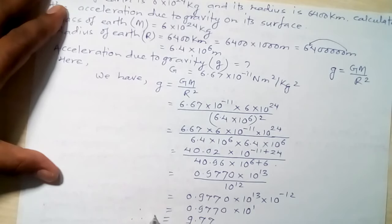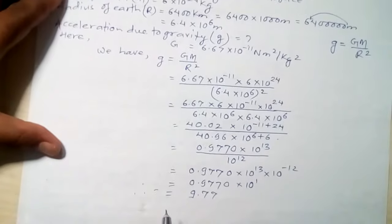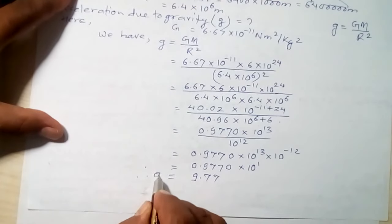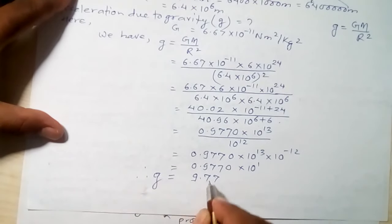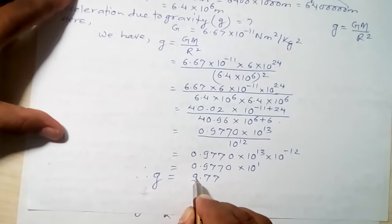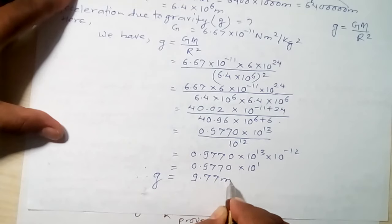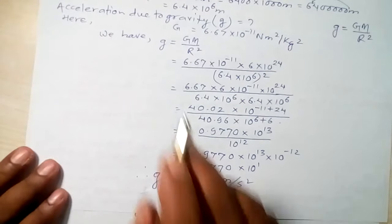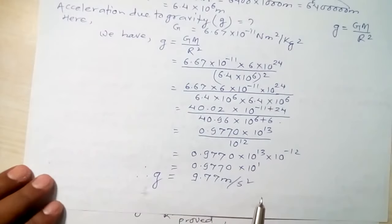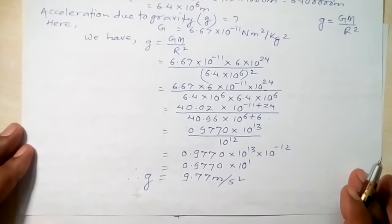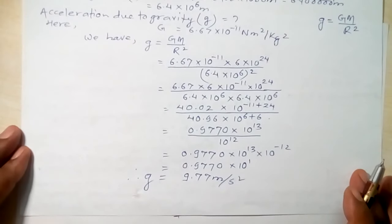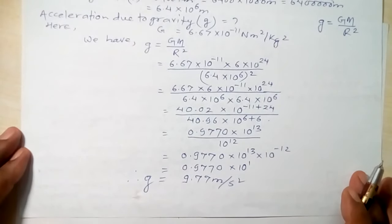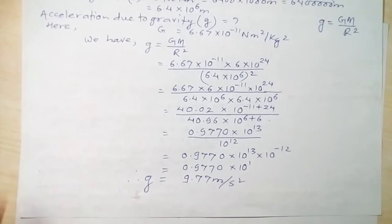Therefore, the final answer is: small g equals 9.77 meters per second squared. The acceleration due to gravity on the surface of the Earth is found to be 9.77 m/s².